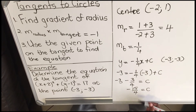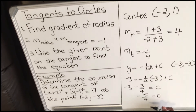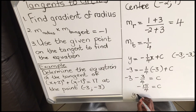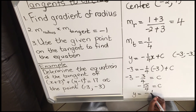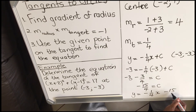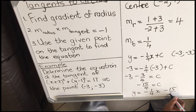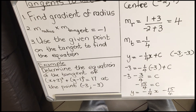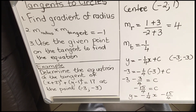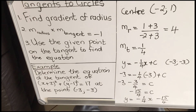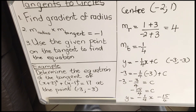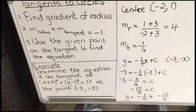You have not answered the question until you write the equation. So the equation is: y = −(1/4)x − 15/4. This is the equation of the tangent. This is how you do it. Thank you for watching — practice, practice, practice and you'll get it right. This is not a hard section, you just need to practice.